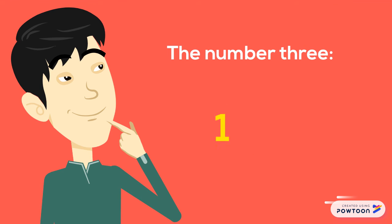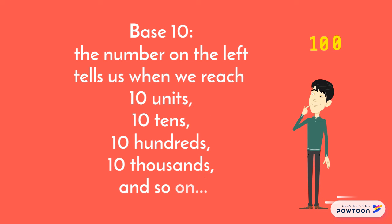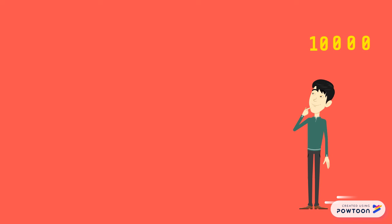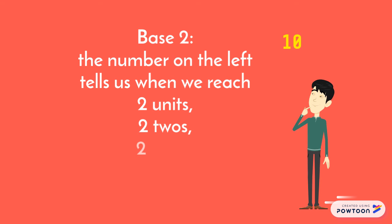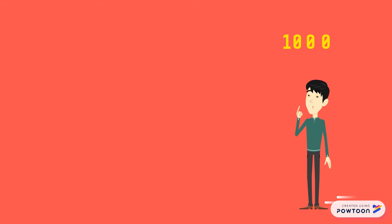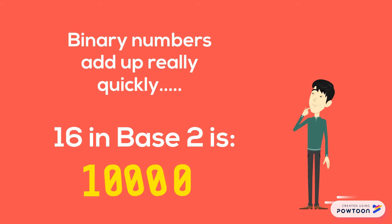And when we get to 3, it's a 1 and a 1. So in base 10, the number on the left tells us when we reach 10 units, 10 tens, 10 hundreds and 10 thousands. In base 2, the number on the left tells us when we reach 2 units, 2 twos, 2 fours and so on. This allows binary numbers to grow really quickly. For example, the number 16 looks like 10,000 in binary.